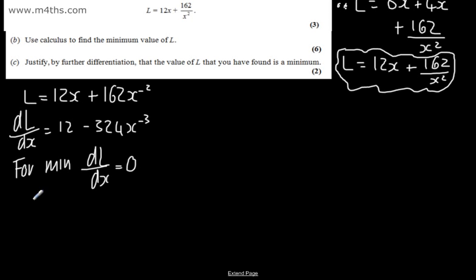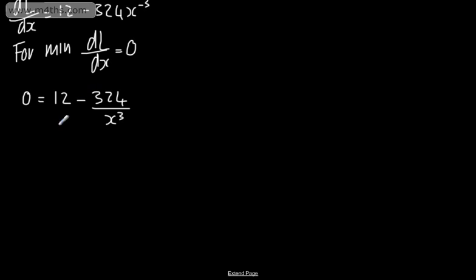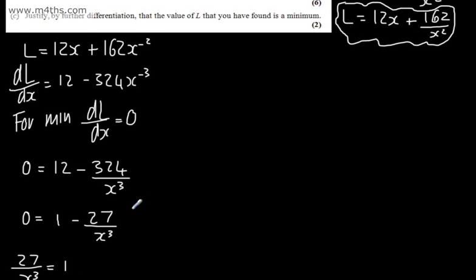So let's go ahead and write this out. Now with this, I'm just going to write this, 0 is going to be equal to 12 minus 324 over x cubed. We can divide both of these by 12, so I can write 0 is equal to 1 minus 27 over x cubed. Adding 27 over x cubed to both sides, that will be equal to 1. So we can write from here now that x cubed is equal to 27, so x is going to be equal to 3. So x is going to be equal to 3, that gives me the value of x.